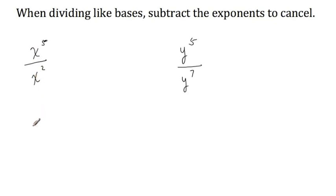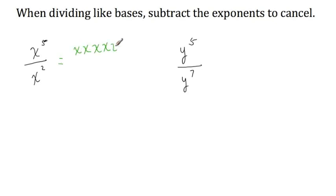All we need to do is subtract the exponents to cancel. To cancel, we look at where there are more factors of x — either in the numerator or in the denominator. This exponent of five indicates that there are five factors of x in the numerator. In other words, we could write this equivalently as x times x times x times x times x — that's what x to the fifth power means. Divided by x squared, which means x times x. Since exponents tell you how many times to use the base as a factor, all of these x's in the numerator are factors, and we can cancel factors.